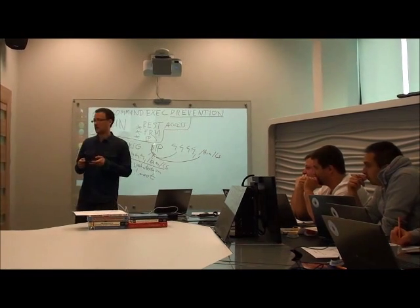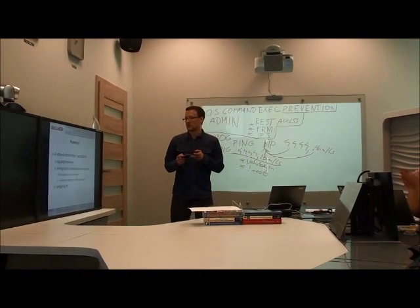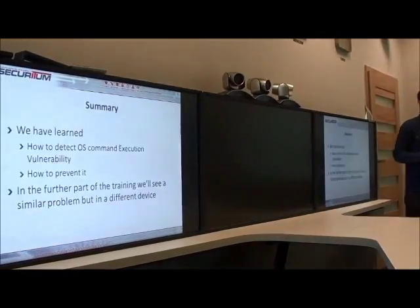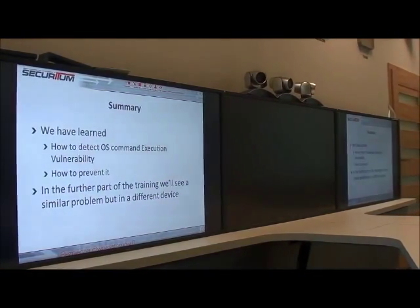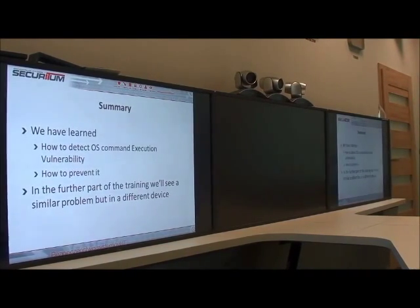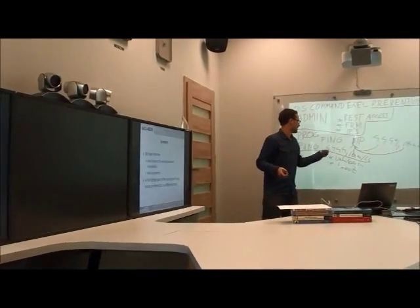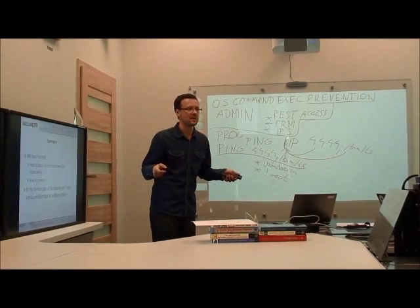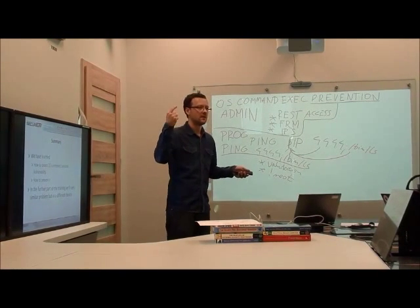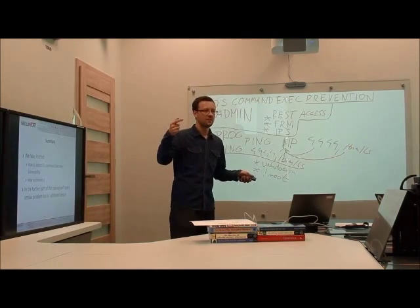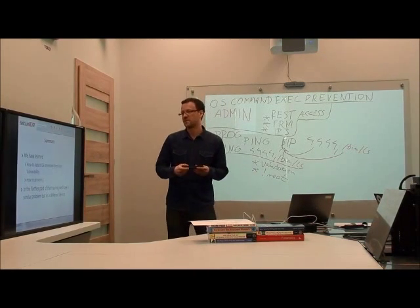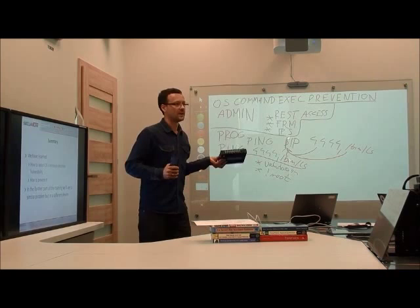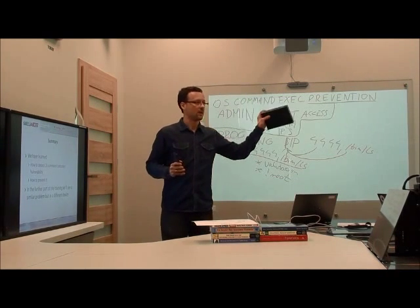You did very well. We can now sum up our module. We have learned how to detect the vulnerability and how to prevent it. Once again, what were those injection characters? Semicolon, ampersand ('%26'), and pipe. In the final part of the training, you will be able to test all this knowledge on another device in our lab — it's a TP-Link device.